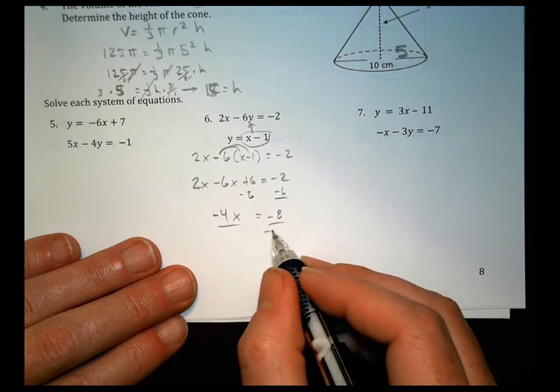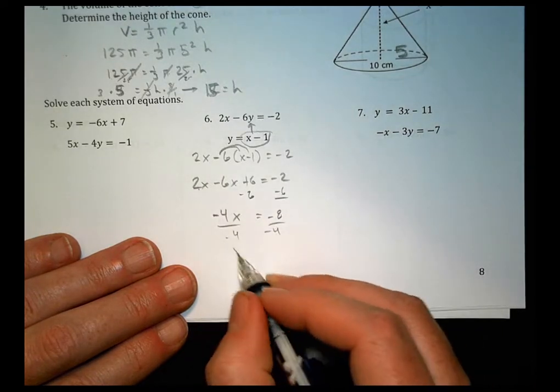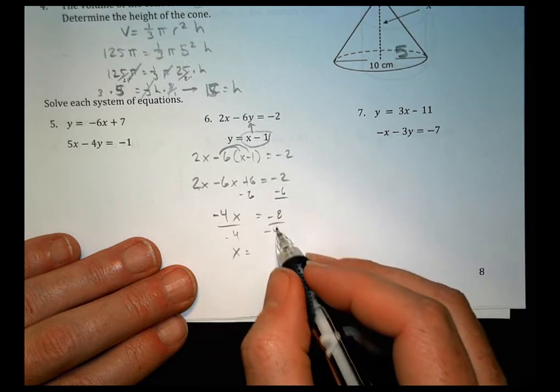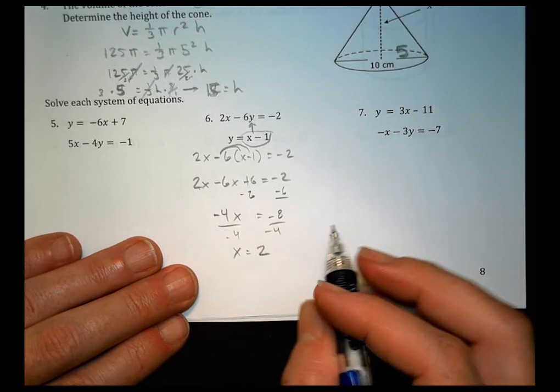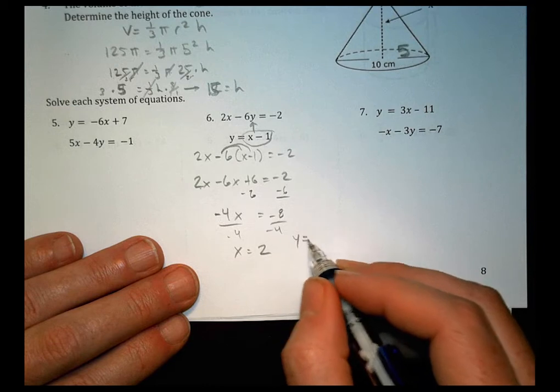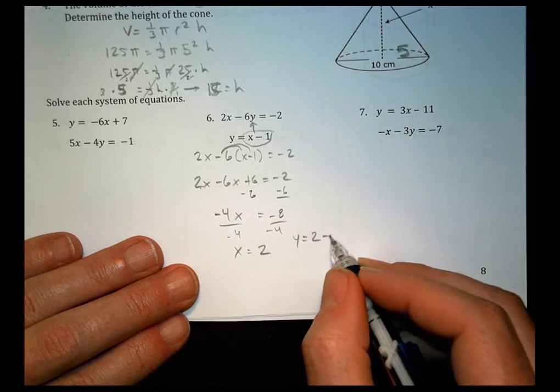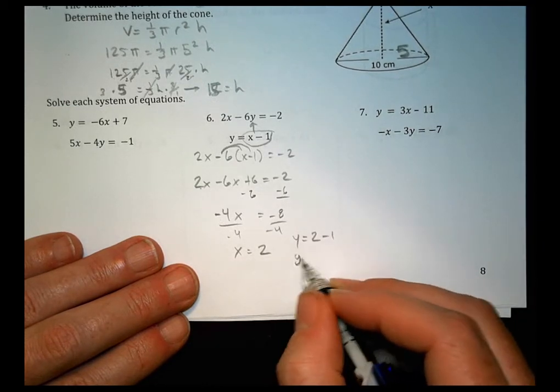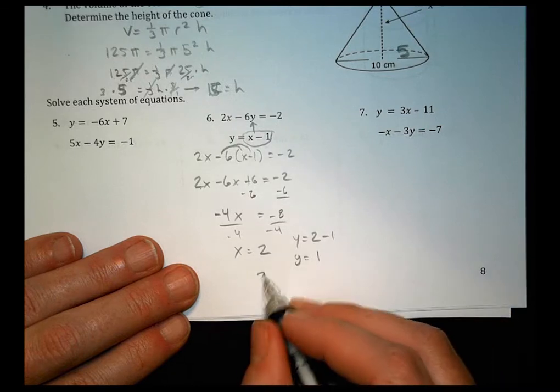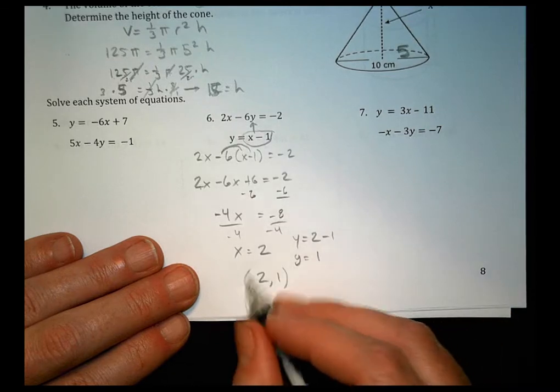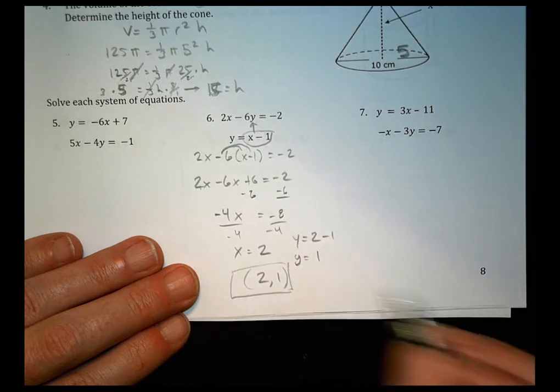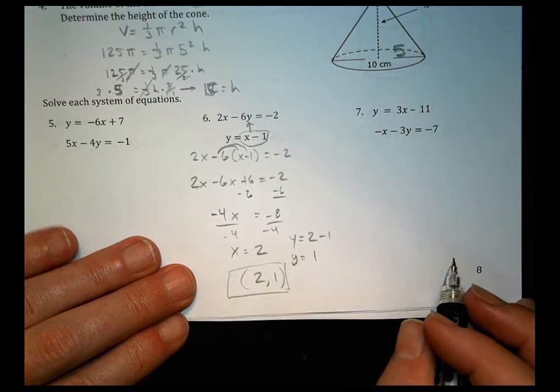2 minus 6 is negative 4x. We're going to divide both sides by negative 4. So x equals negative 8 divided by negative 4 is a positive 2. We plug that back into our equation. y equals 2 minus 1, and so y equals 1. So our solution becomes 2 comma 1 just like so.